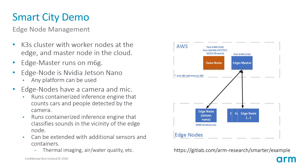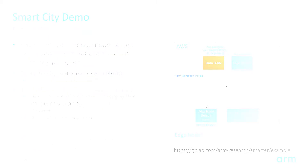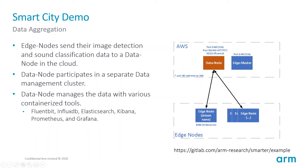The edge side of this demo is located in our lab. Here we used a variety of hardware platforms, which include the NVIDIA Jetson Nano, the Jetson NX, and a Raspberry Pi, all of which are running K3S. Each of these platforms has a camera and a microphone attached to it. The cameras are used to count the cars and pedestrians that the edge nodes see, and the microphones are used for classification of the sound occurring in the vicinity of these nodes.